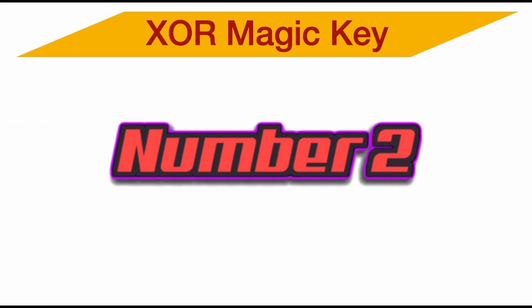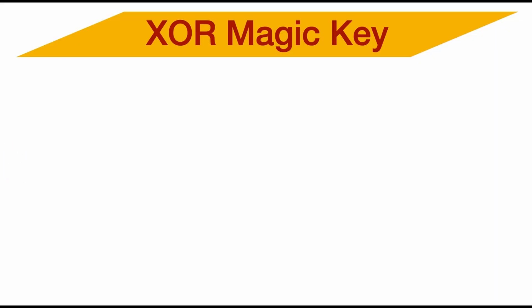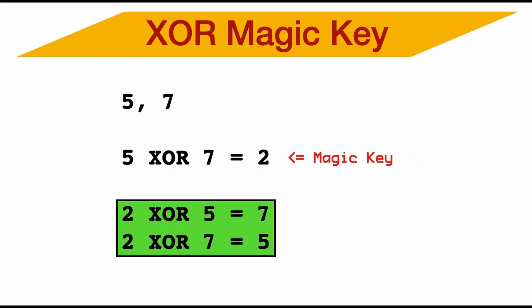Number two, XOR magic key. XOR is a Boolean operator, which stands for exclusive OR. If you XOR two numbers together, let's say five and seven, you get the number two. And that's the magic key. How do I use the two? Well, if I XOR two with five or two with seven, I produce seven or five. I use this on the tech to distinguish between am I in data mode or address mode? DA or AD?